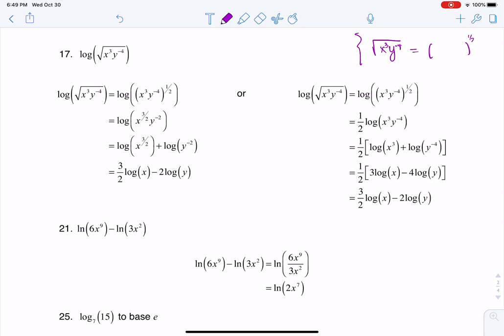So we talked about rational exponents way back in chapter 2, but basically it works with whatever the index is here. In this case, it's a square root, so that would be a 2. Whatever that index is, that becomes your denominator here, and then I have in parentheses x cubed y to the negative 4.